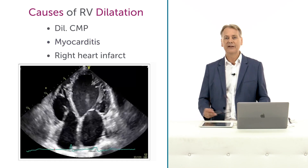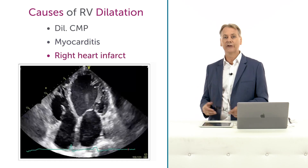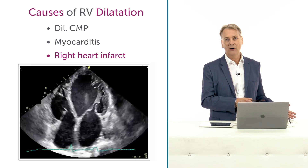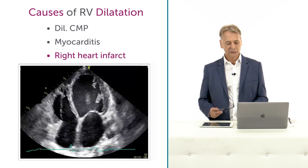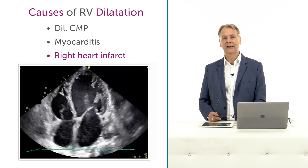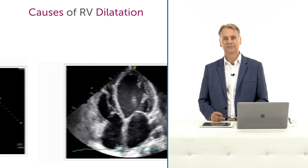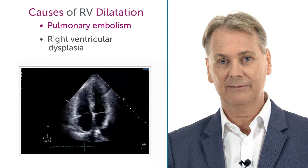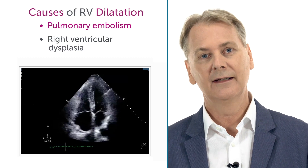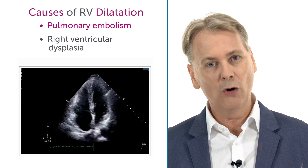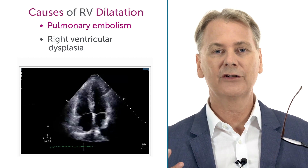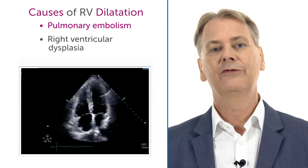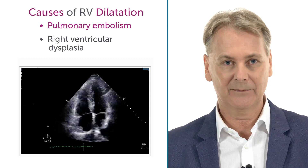If you have a patient who had an inferior infarct where the right ventricle was involved, then too you will see a dilated right ventricle. In patients with pulmonary embolism, remember the right ventricle is not able to cope with an acute pressure overload — in this situation, the first sign will be a dilatation.